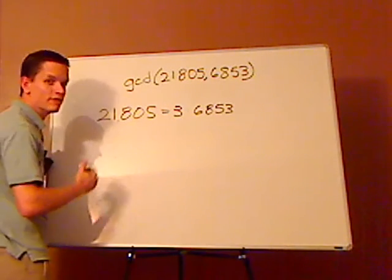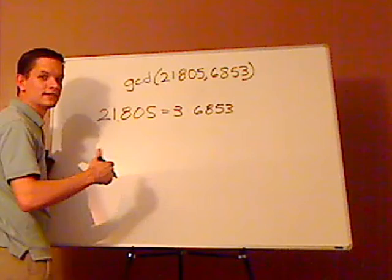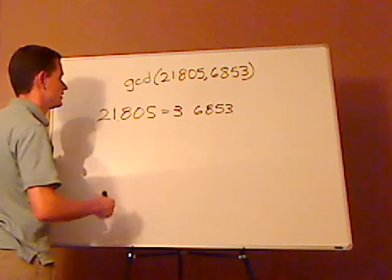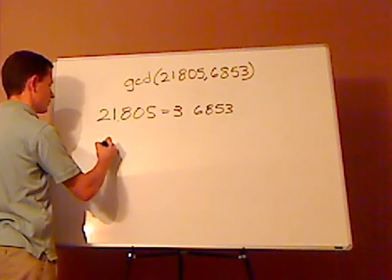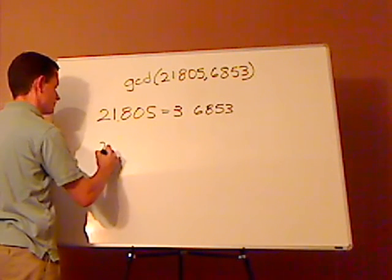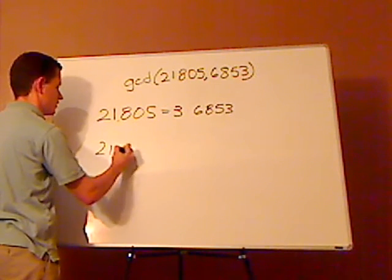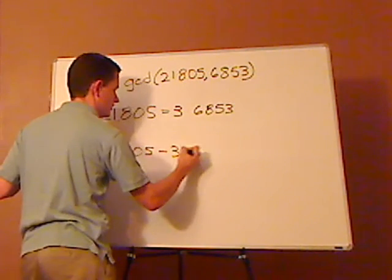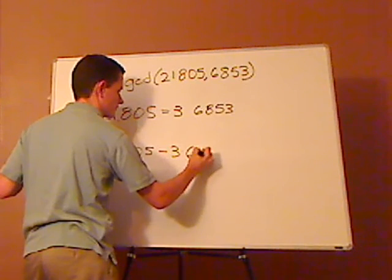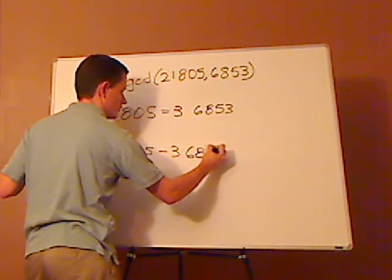On your calculator, if you have a scientific calculator, it takes into account the order of operations. If not, you're going to have to just do them separately. But with the scientific calculator, you're going to type in 21,805 minus three times 6,853.